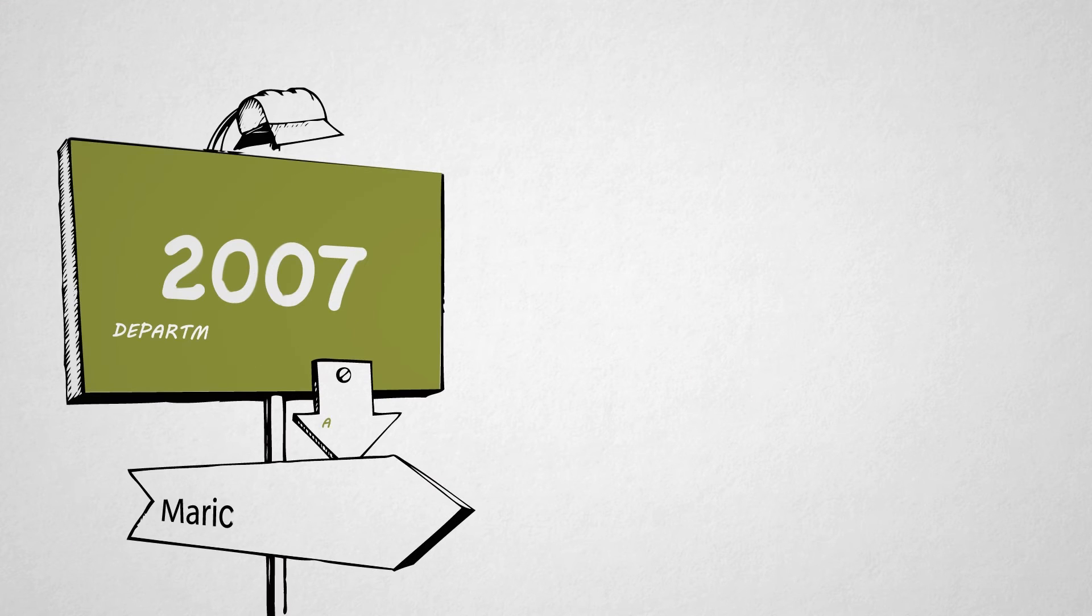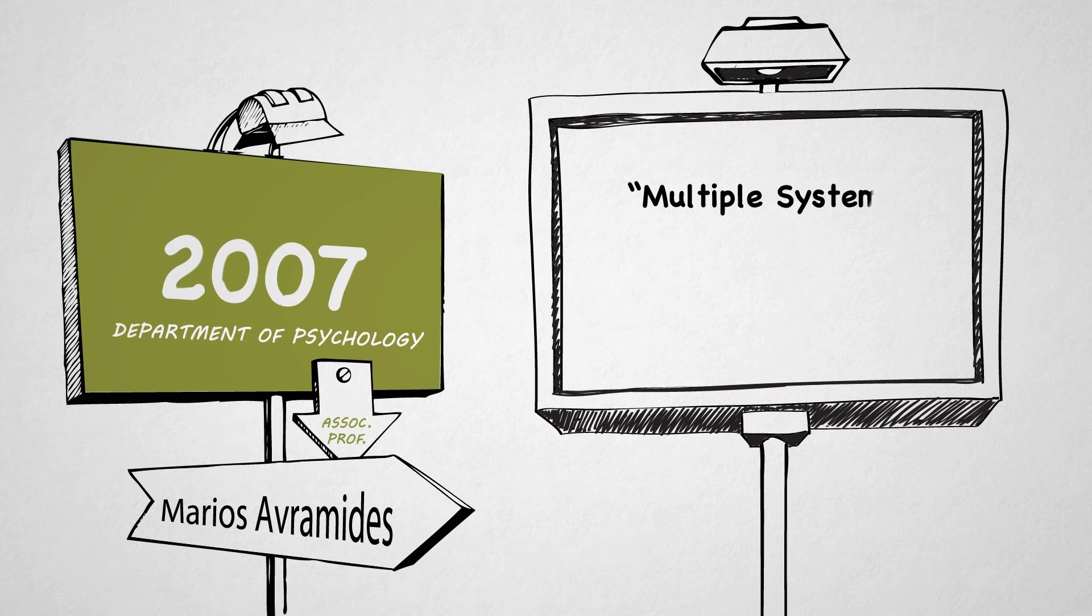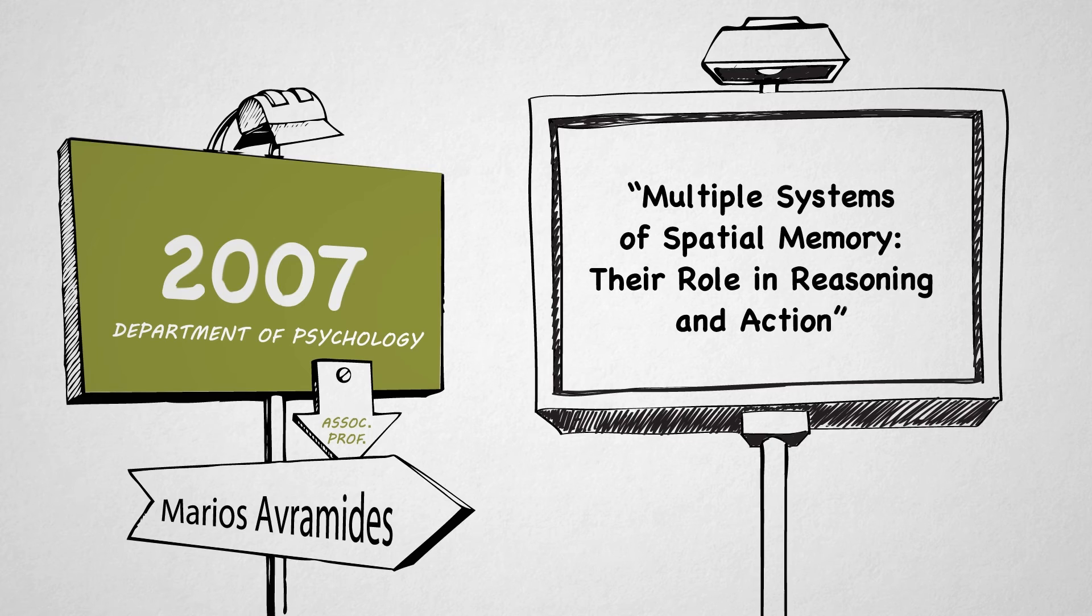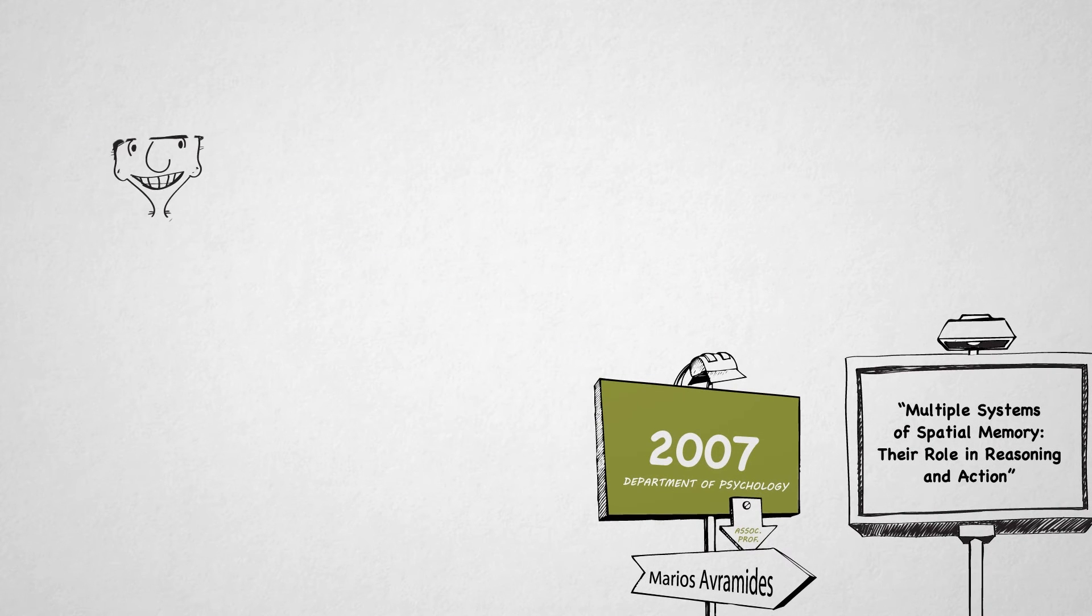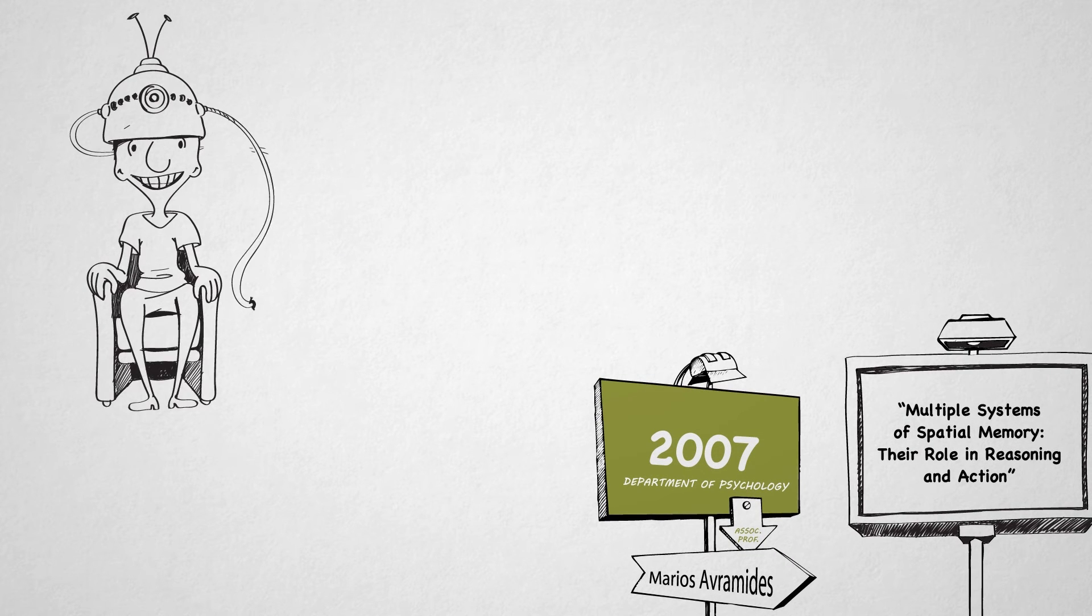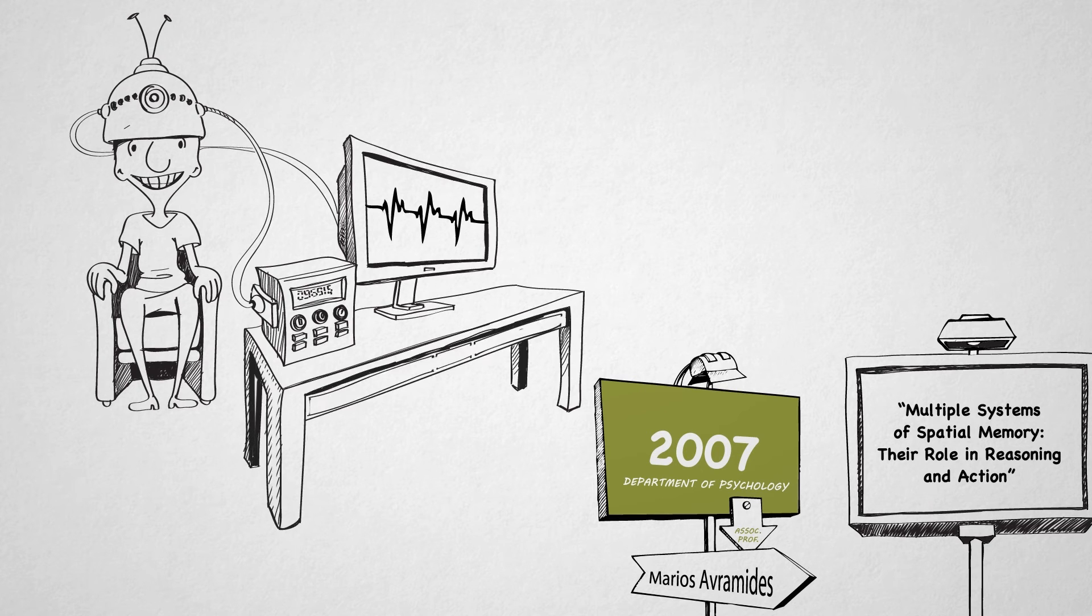In 2007, Associate Professor Marios Avraamides was awarded an ERC Starting Grant of 1.5 million euros to investigate how the human brain encodes information in spatial memory through experiments in virtual reality.